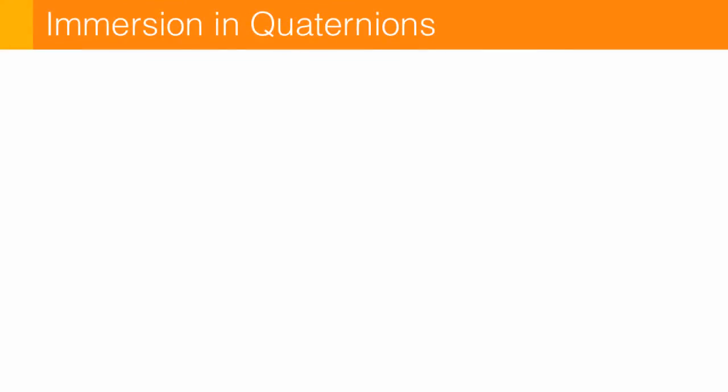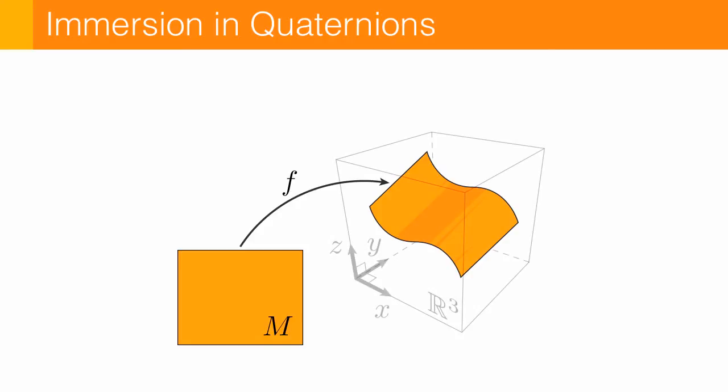Okay, so how do we think about the geometry of a smooth surface? Well, one way to do it is to imagine we have an abstract surface M, and a map F that takes each point of M into a three-dimensional space. Now, normally, this is just R3.